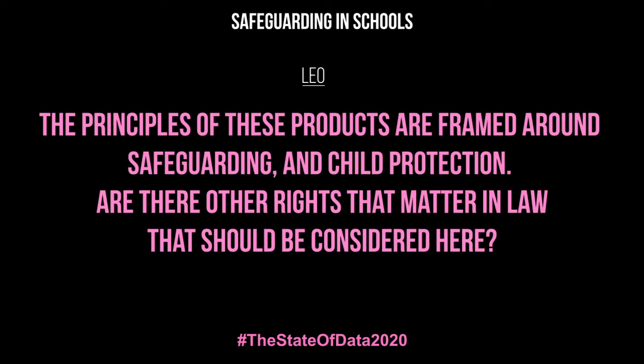Leo, you work in the area of child rights. The principles of these products are framed around safeguarding and child protection — are there other rights that matter in law that should be considered here? The UN Convention on the Rights of the Child is the key legal tool internationally. Every country in the world has signed up, with the exception of the United States, and it covers the full scope of children's human rights. In the context of safeguarding there are important protection-oriented rights, including the right to protection from all forms of violence.